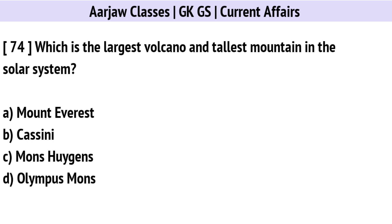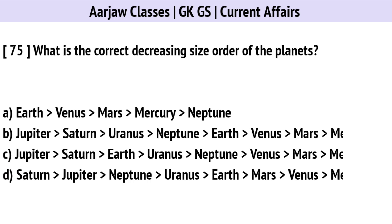Which is the largest volcano and tallest mountain in the solar system? Correct option is D: Olympus Mons.